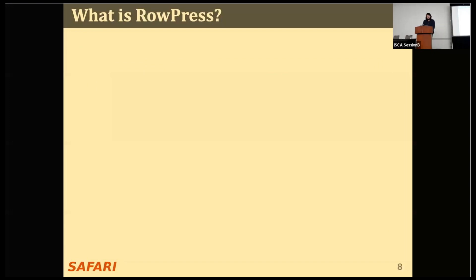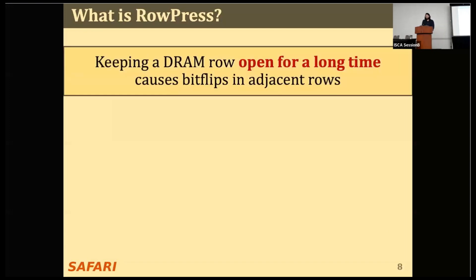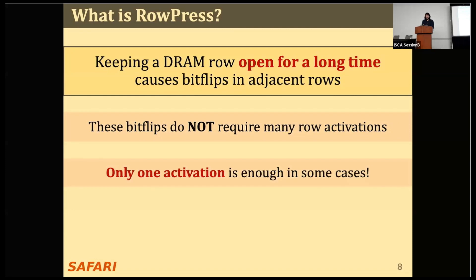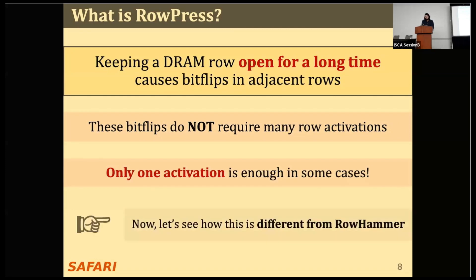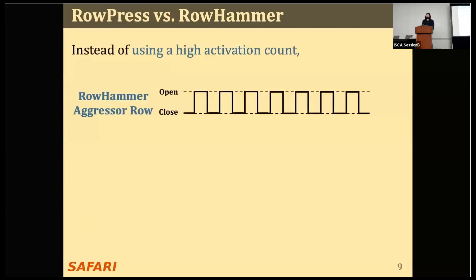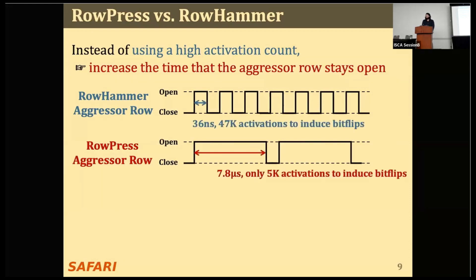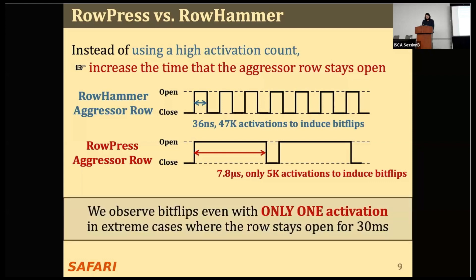So what is RowPress? RowPress is the read disturbance caused by keeping a DRAM row open for a long time, causing bit-flips in adjacent rows. These bit-flips do not require many activations, and we find in some cases only one activation is needed. Now let's see how this is different from RowHammer. Instead of a high activation count, RowPress increases the time that the aggressor row stays open, disturbing adjacent rows enough to cause bit-flips without a very high activation count. We even observe bit-flips with only one activation in extreme cases.